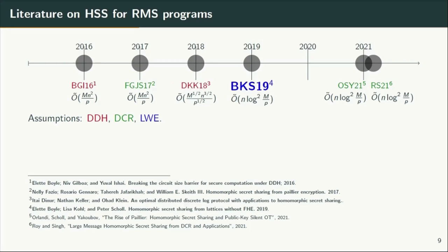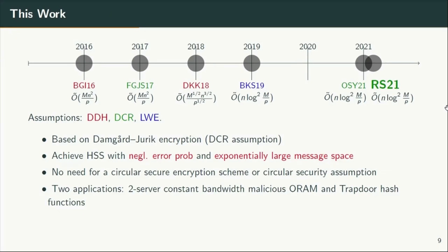These limitations were finally removed by a work due to Boyle, Coel and Shor, which uses lattice-based cryptography. Their scheme is based on the LWE problem and achieves homomorphic secret sharing with exponentially small correctness error and exponentially large message space. The running time of their protocol can be estimated to be order n times log squared m by p, hence m can be exponential in the security parameter and p can be negligible. In this work, we introduce a new HSS construction based on Damgård-Jurik's cryptosystem, which is based on the DCR assumption as well. Our HSS construction achieves negligible error probability and exponentially large message spaces without relying on stronger lattice-based assumptions, and unlike all previous works, we do not need any circular secure encryption scheme or circular security assumptions. We also present two new applications: a two-server constant bandwidth malicious secure ORAM, and a trapdoor hash function.